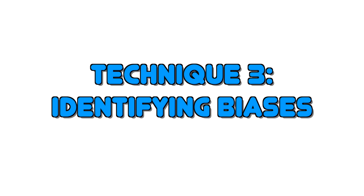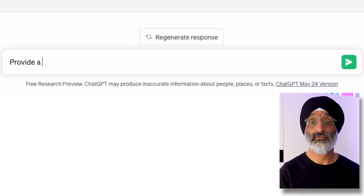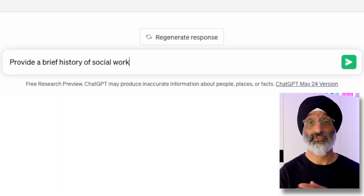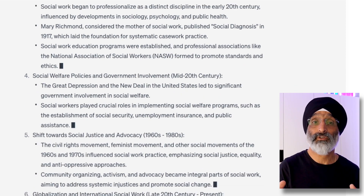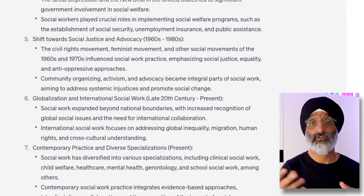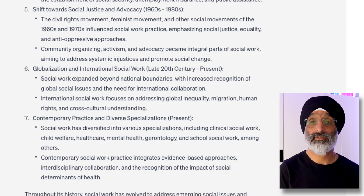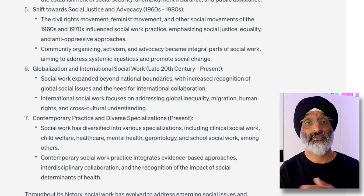Technique three: identifying biases. The third technique involves asking students to identify biases in ChatGPT-generated responses, and this is quite important. You can do this by having students use ChatGPT to generate text on a particular topic and then encourage them to point out the flaws. For example, if I ask my students to ask GPT to provide a brief history of social work, you'll see that the responses generated by ChatGPT really only focus on the history of social work in the United States without mentioning other regions like Europe, Africa, Asia and so on.